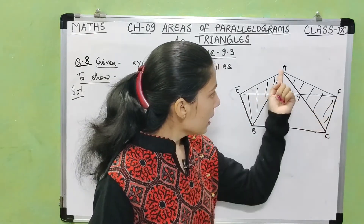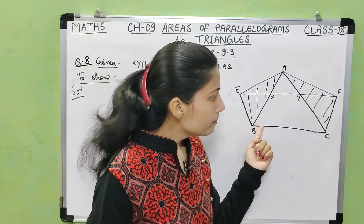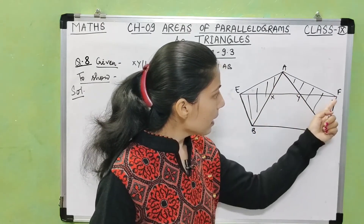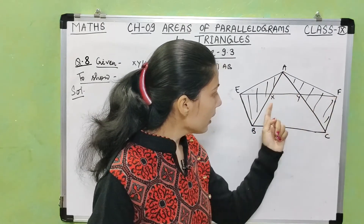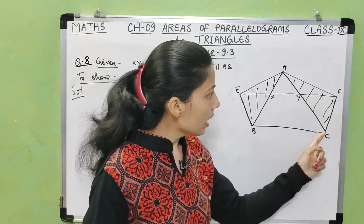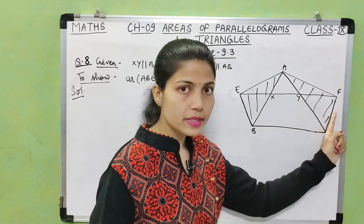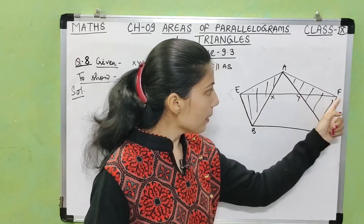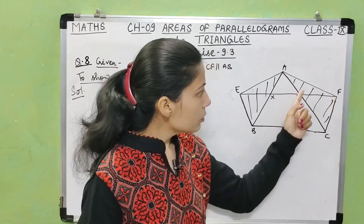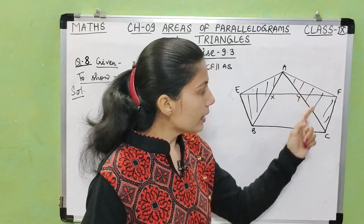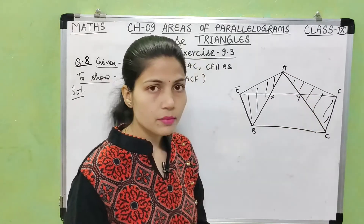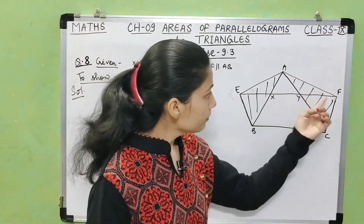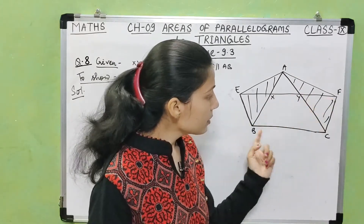Similarly, CF is parallel to AB. So triangle ACF and parallelogram FXBC are on the same base CF and between the same parallels CF and AB. Therefore area of triangle ACF is half the area of parallelogram XFCB.